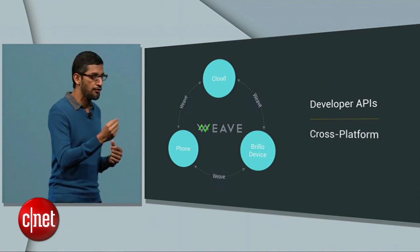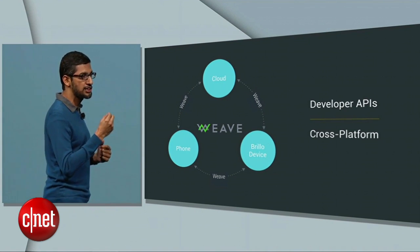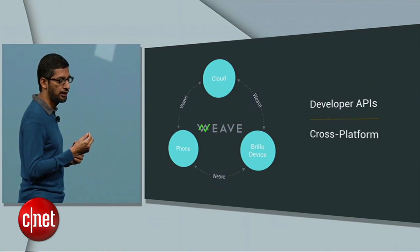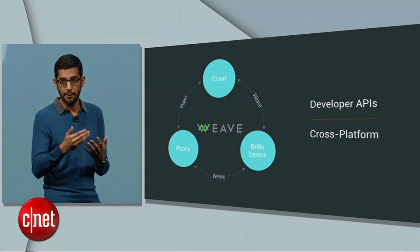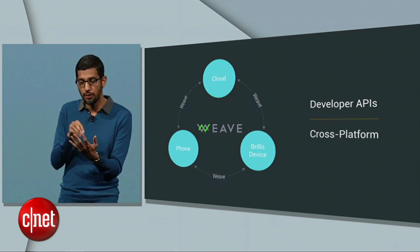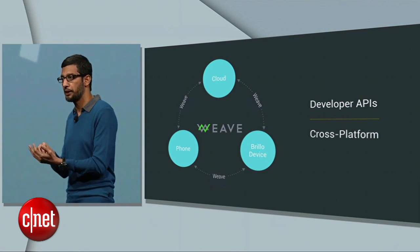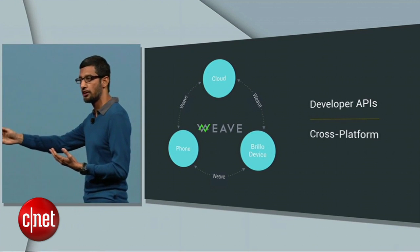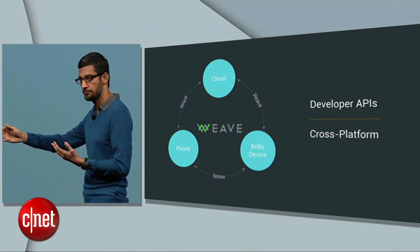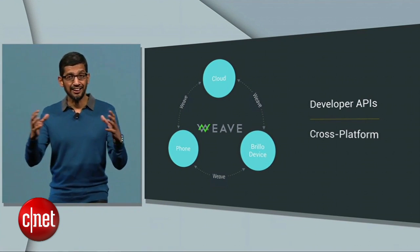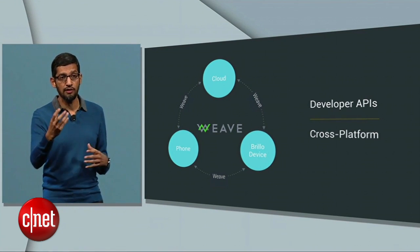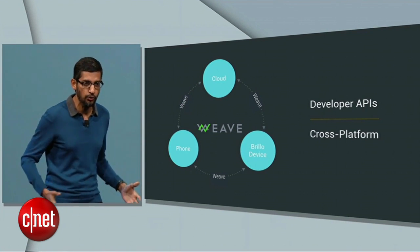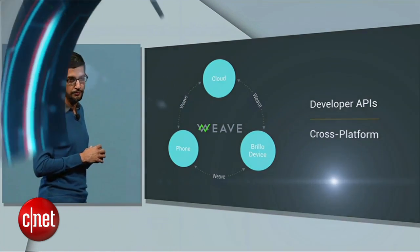The powerful thing is Vive exposes developer APIs in a cross-platform way. So if you are writing a recipe application on your smart phone, the actual application can now turn on your smart oven and set it to the right temperature. And any connected device — your oven can be voice enabled easily because we provide voice APIs as part of this.